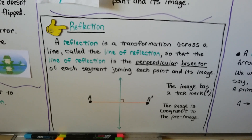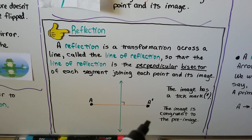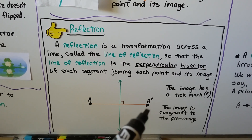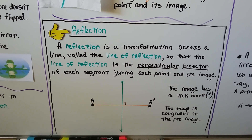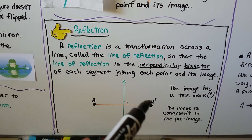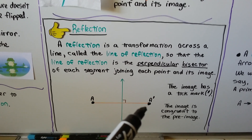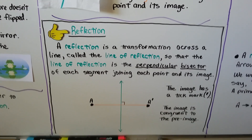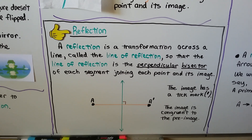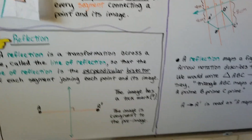We know which is the original and which is the transformation because the transformation is going to have tick marks. If we transformed the figure again, it would be a double prime or a triple prime. So the first transformation is read as "A prime."